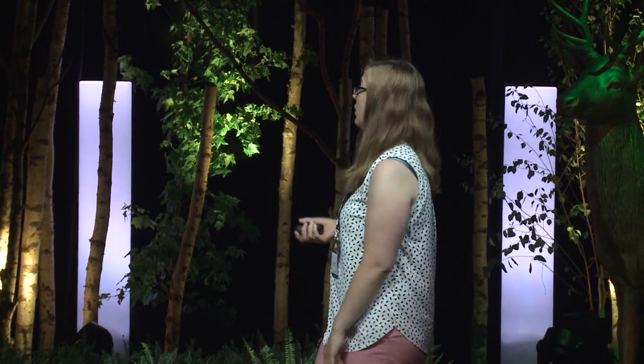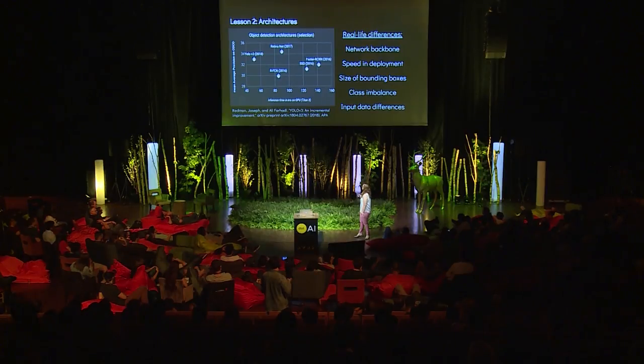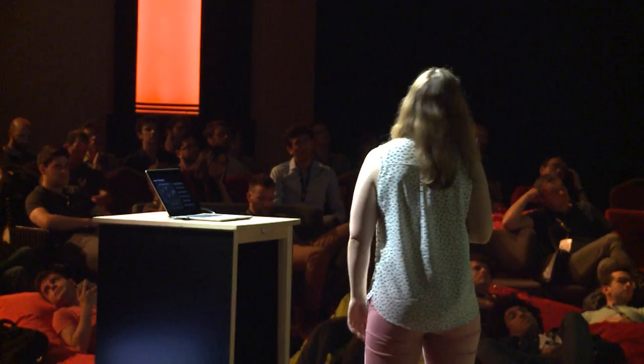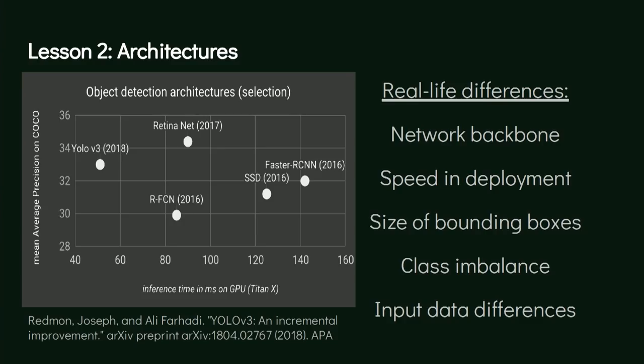So I've had datasets where basically all of this plot didn't really mean anything, and the architectures performed very differently. I've brought this list of considerations, especially around speed and deployment, because the inference time axis shown here is for a GPU.